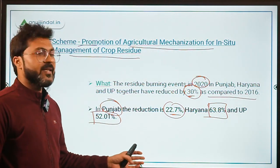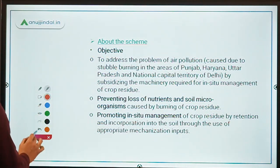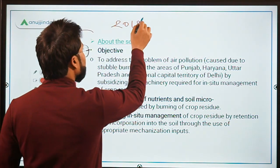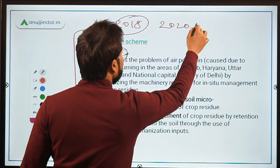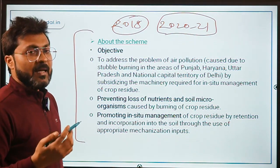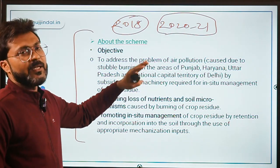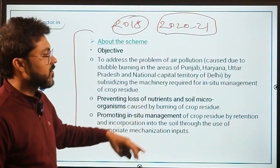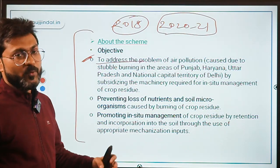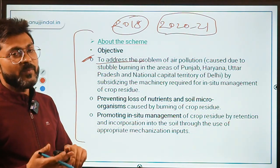Now let's discuss the scheme itself. It was launched in 2018 and extended up to financial year 2021. Its primary objective was to address the problem of air pollution caused by stubble burning in Punjab, Haryana, Uttar Pradesh, and Delhi.